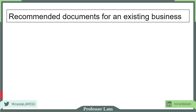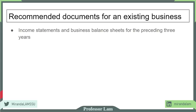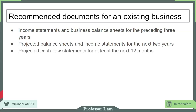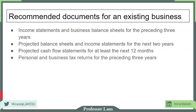For an existing business, a different set of documents is needed. Because an existing business has its own history, the bank will look at financial statements — the income statement and balance sheets for the business — as well as projected pro forma balance sheets, income statements, and cash flow statements. Rather than focusing on the owner's financial status, they will focus on the business's financial status. They'll also want both business and personal tax returns.